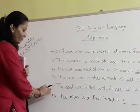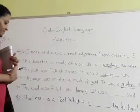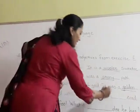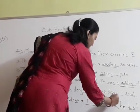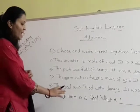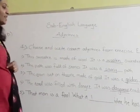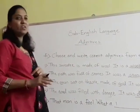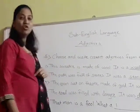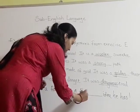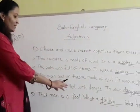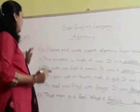Question number 4: the road was filled with danger. It was a blank road. We have to use 'dangerous' here — dangerous road. Fifth sentence: that man is a fool. What a blank idea he has. According to the adjective, we have to use 'foolish'. What a foolish idea he has. Like this, we have solved question number F.